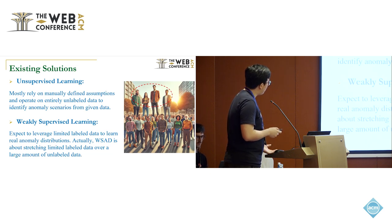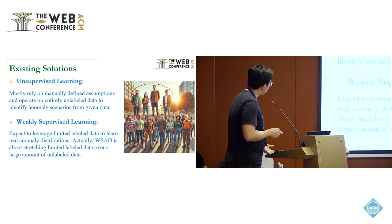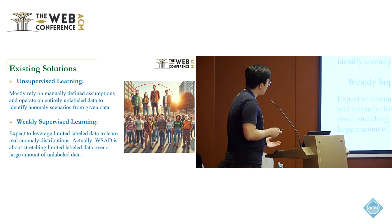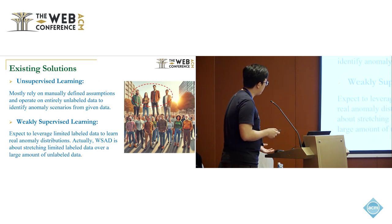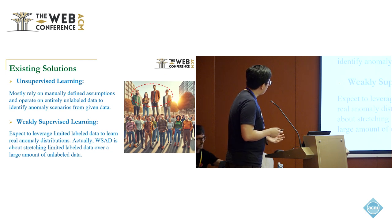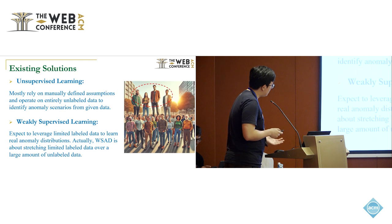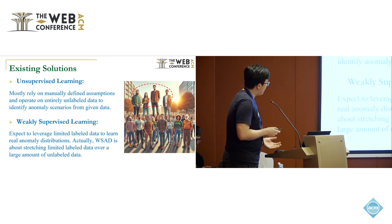Given that labeled anomaly data is typically scarce or costly to acquire, unsupervised learning approaches mostly rely on manually defined assumptions and operate on entirely unlabeled data to identify anomaly scenarios. However, due to the dependency on assumptions or lack of supervision information, unsupervised learning approaches often deviate significantly from the actual results in practical applications. Thus, weakly supervised learning approaches have been proposed, expecting to leverage limited labeled data to learn real anomaly distributions.